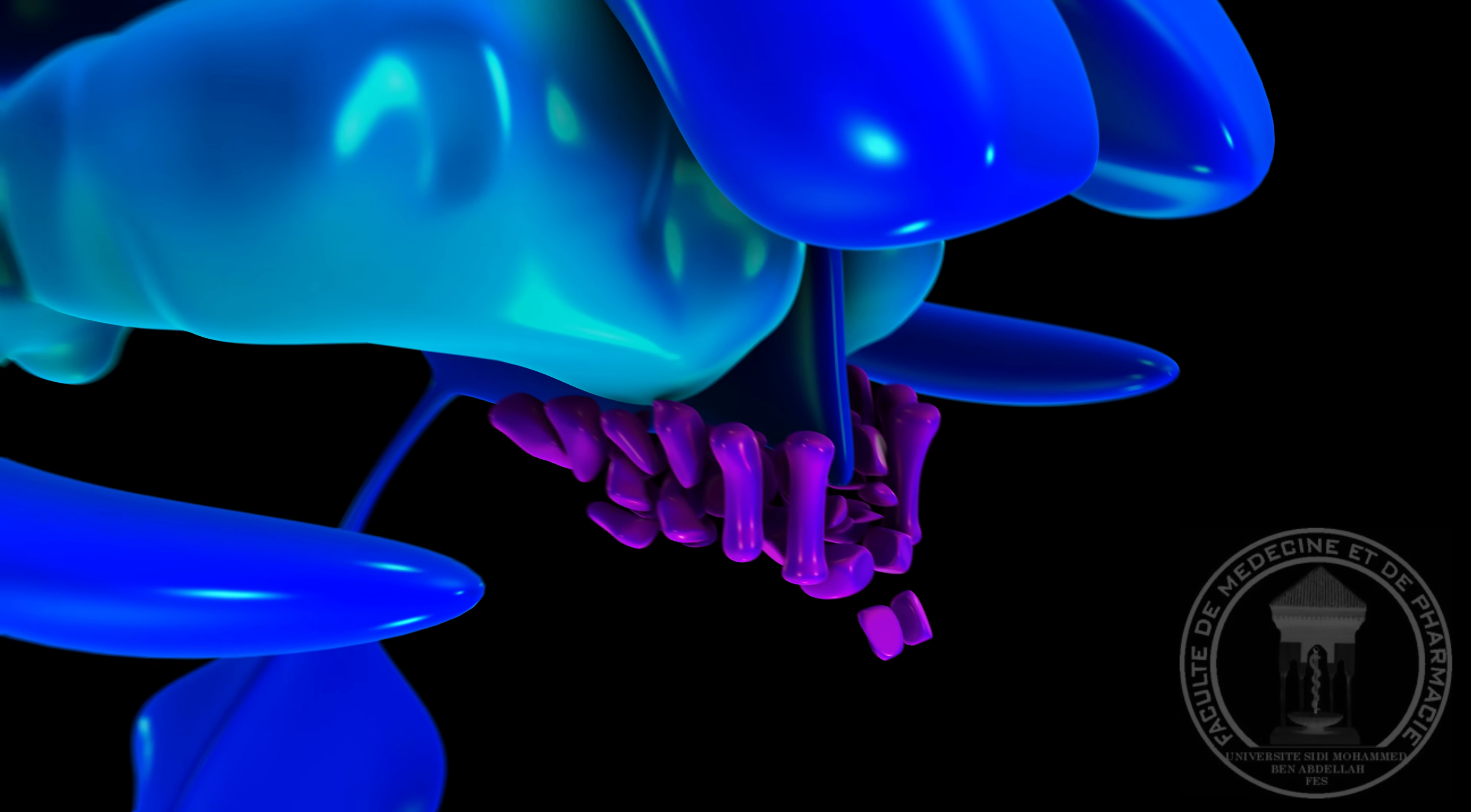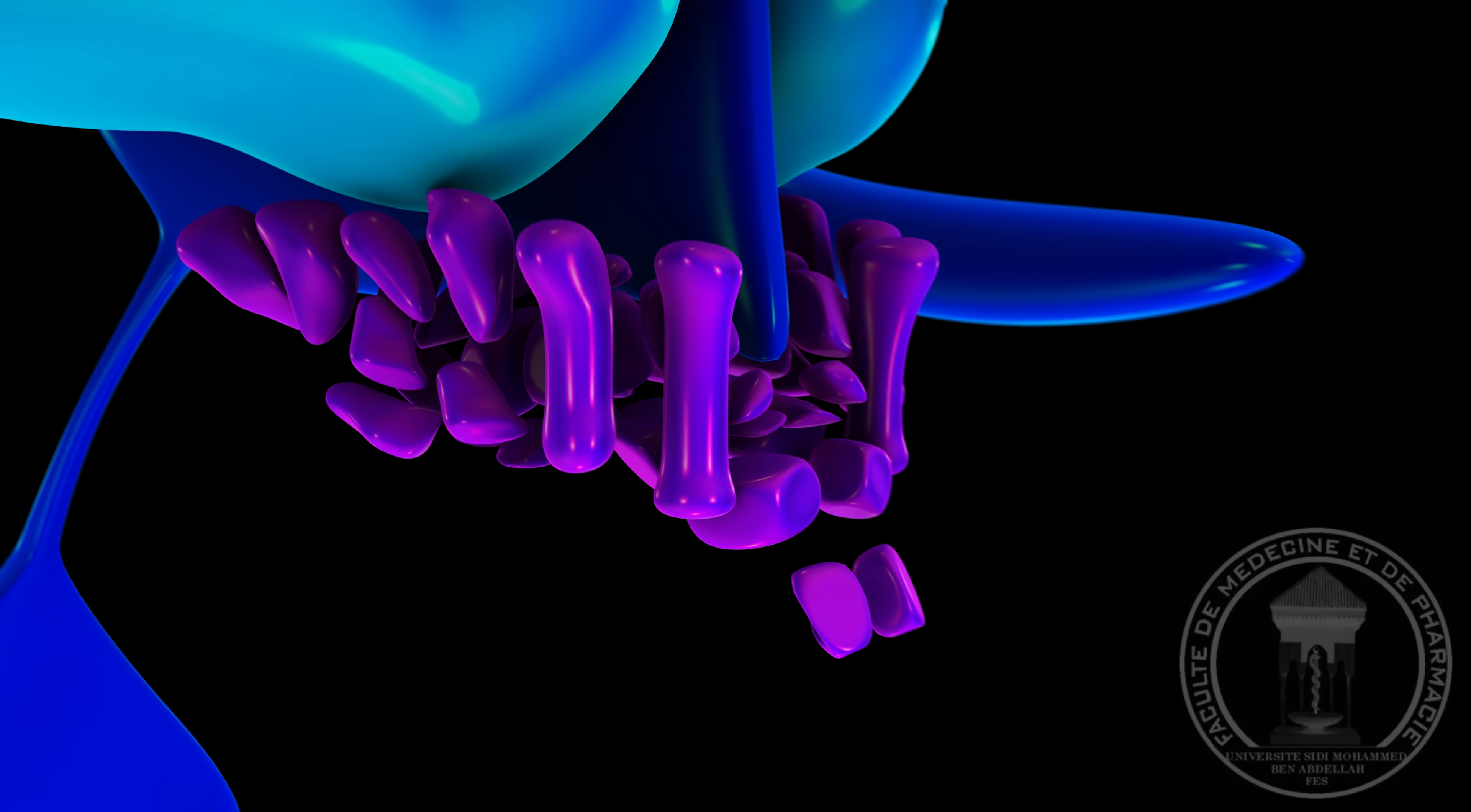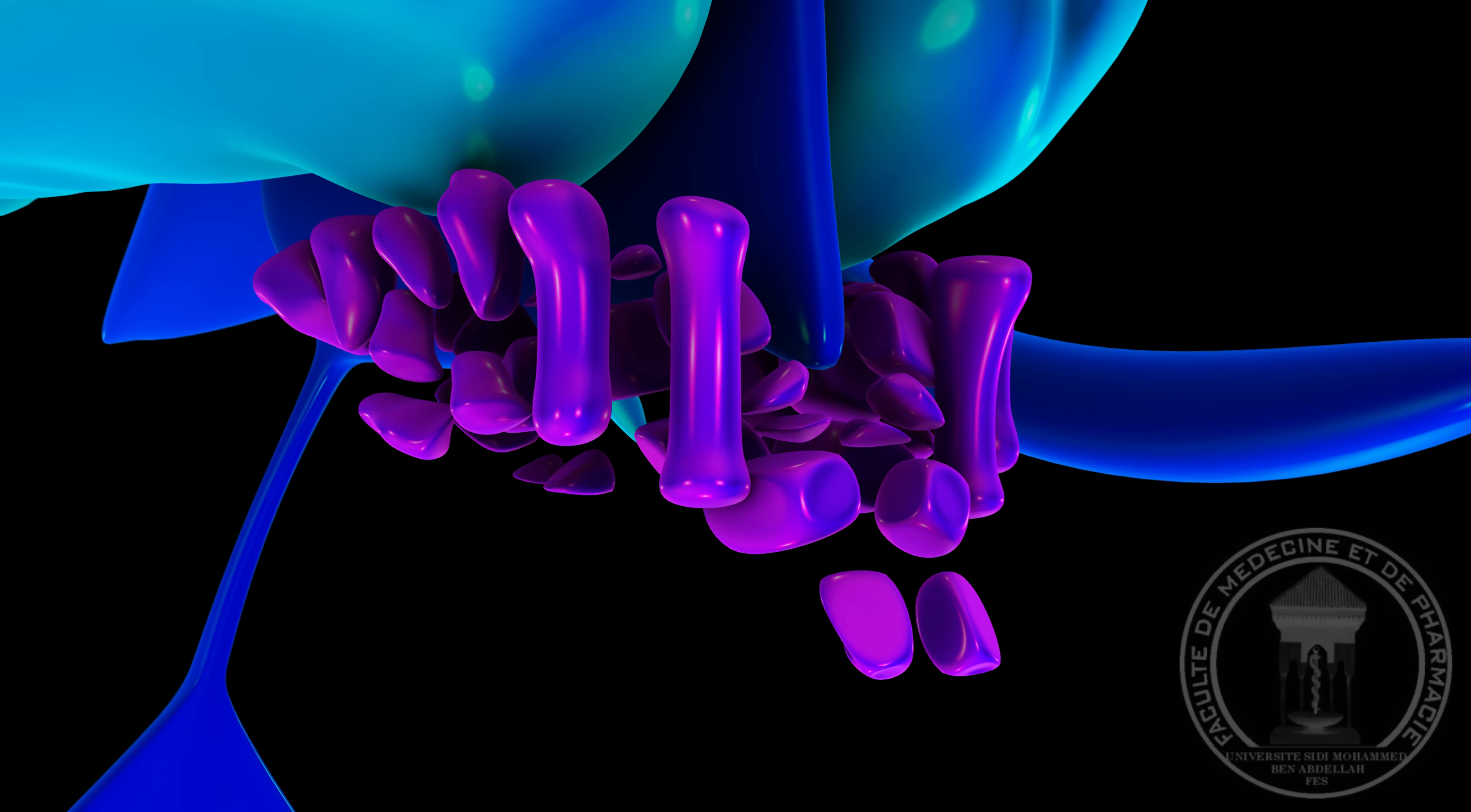L'hypothalamus, situé directement en bas et en avant du thalamus, est nettement plus petit en taille et en volume que ce dernier. Cela dit, son rôle dans l'organisme n'est pas du tout le moindre.